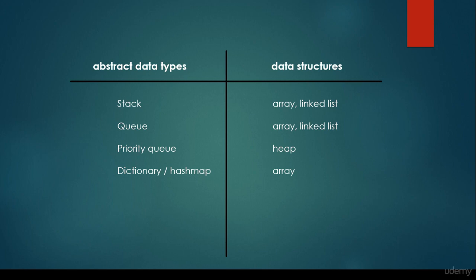We have dictionaries and hash maps and arrays as the underlying data structures. So it's very, very important that abstract data types and data structures are not independent from each other — abstract data types are the specifications, and every abstract data type has an underlying data structure that implements the behavior specified in the abstract data type. So that's the difference between ADTs and data structures. Thanks for watching.